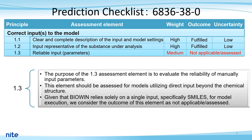For 1.1 to 1.3, we are required to ensure input is correct depending on the complexity of models. BioWin uses a single input only — SMILES — to run the model. All the necessary properties to determine the chemical structure, including the chemical name, CAS number, and SMILES are available, so we put fulfilled as 1.1 and 1.2 outcomes. The purpose of the 1.3 assessment element is to evaluate the reliability of manually input parameters. This element should be assessed for models utilizing direct input beyond the chemical structure. Given that BioWin relies solely on a single input, specifically SMILES, for model execution, we consider the outcome of this element as not applicable.